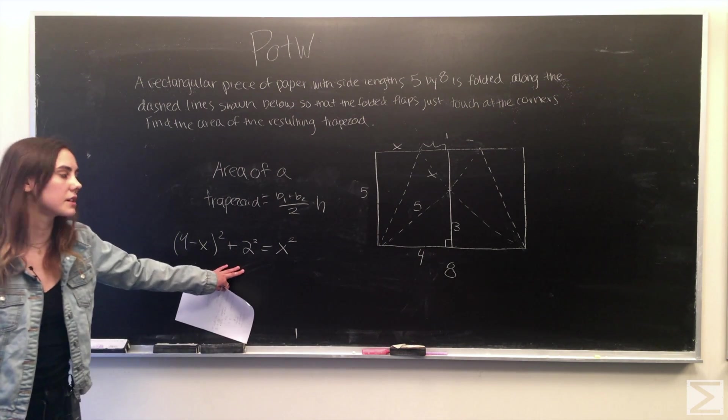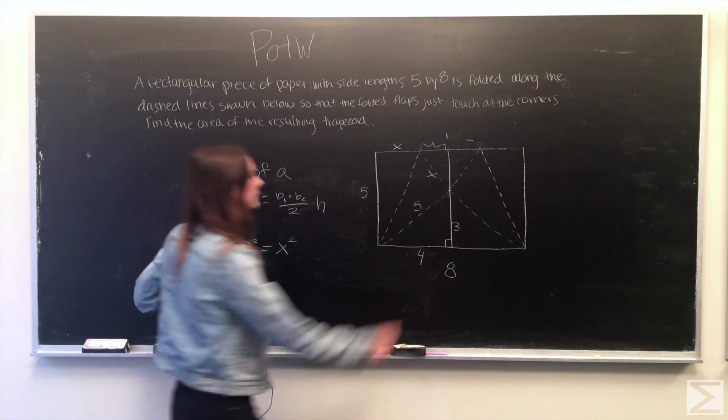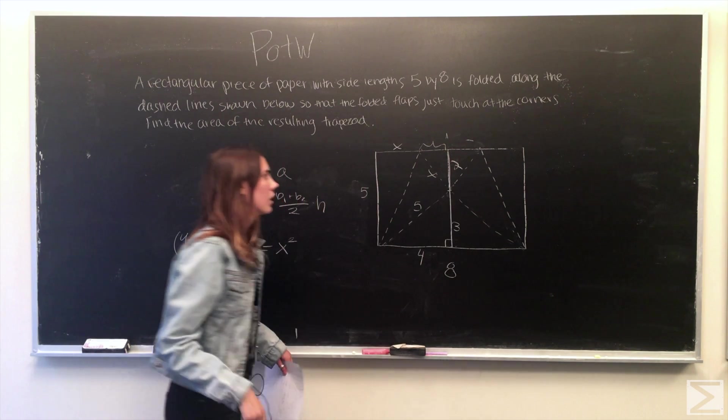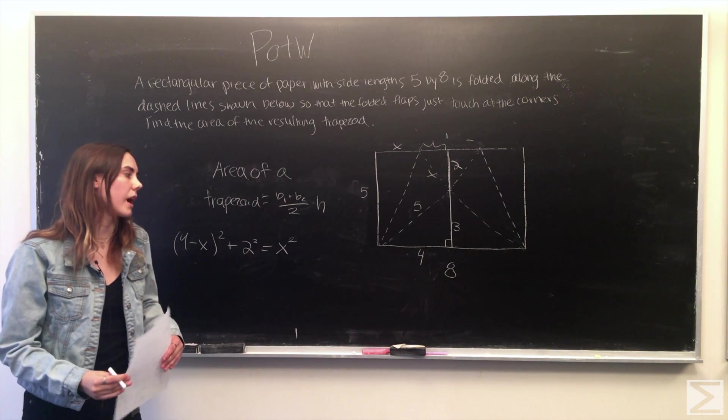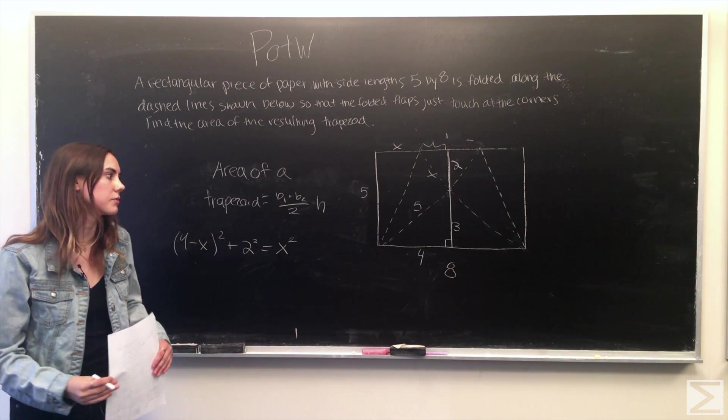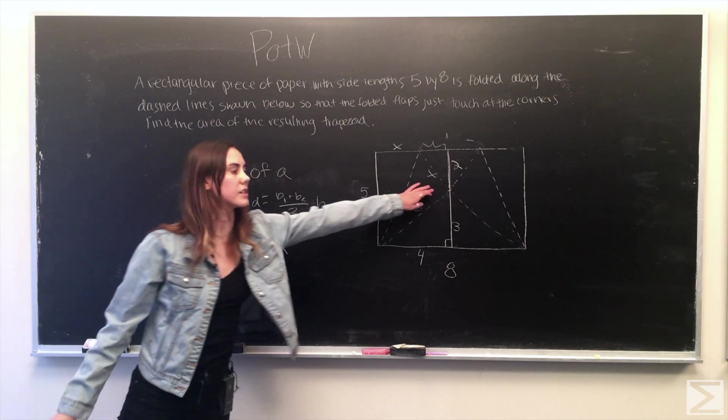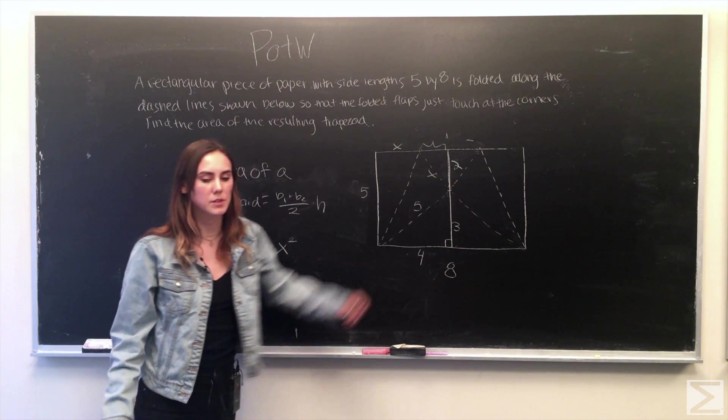We actually get this 2 from this line here. We can just solve for that simply by knowing that the height of the paper is 5 and we know that up until this point the height is 3, so this has to be 2.